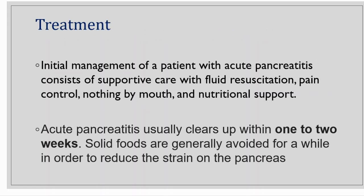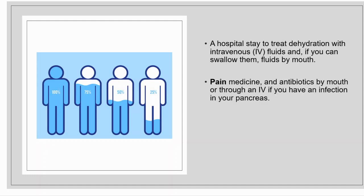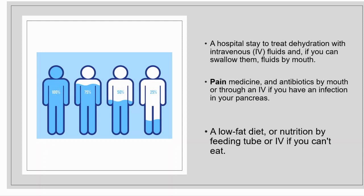Treatment is generally supportive, with fluid resuscitation, pain control, nothing by mouth, and nutritional support. Acute pancreatitis usually clears up on its own within one to two weeks, and solid foods are generally avoided for a while to reduce strain on the pancreas. Treatment stages include a hospital stay to treat dehydration with intravenous or oral fluids, pain medicine and antibiotics if there is an infection in the pancreas, and a low-fat diet or nutrition by feeding tube or IV if the patient cannot eat.